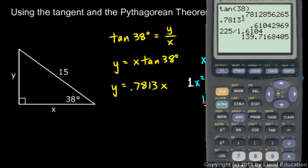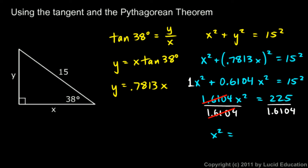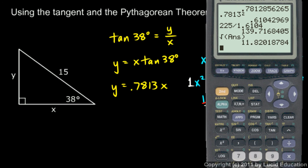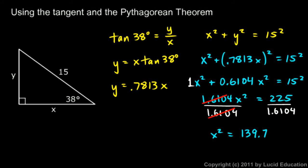So x squared is 139.7, and then we take the square root of that. So I'll just do the square root of my previous answer, and x comes out to 11.82. So x right there is 11.82.